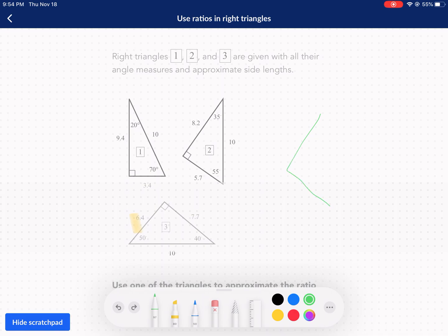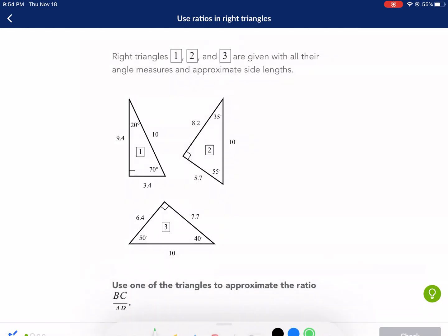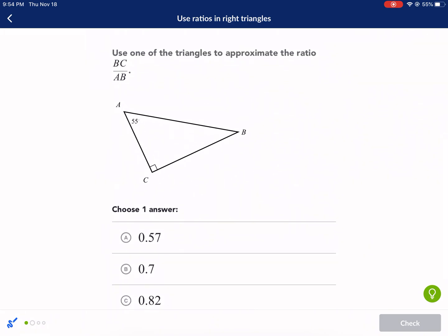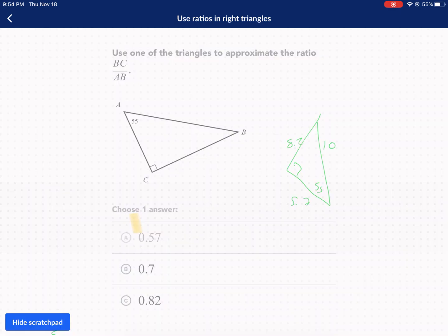I need these measurements. Here's my right angle, I have 5.7, then my 55 there, 8.2 and 10, because I'm just going to reference this as I scroll down. It's saying I need to approximate the ratio of BC over AB. So let's figure out which angle we're referencing. There's my 55, I'm going to match it up with my purple. Now I need to draw out the sides I'm looking for.